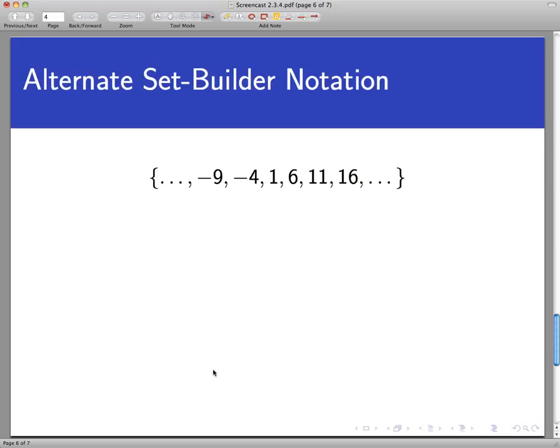There's another way to write a set in set builder notation as well that might make things a little bit easier to think about. So take a look at this double infinite set here. Pattern continues on both sides and you might stare at this for a little bit and think about what is the pattern here. It's a little hard to isolate.